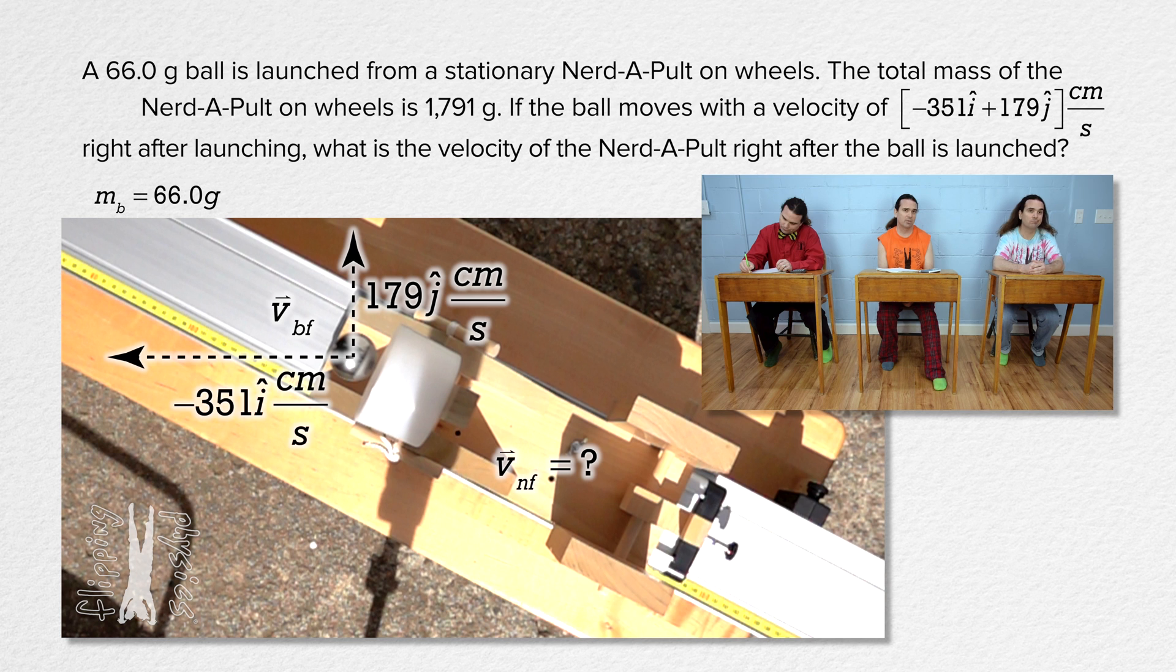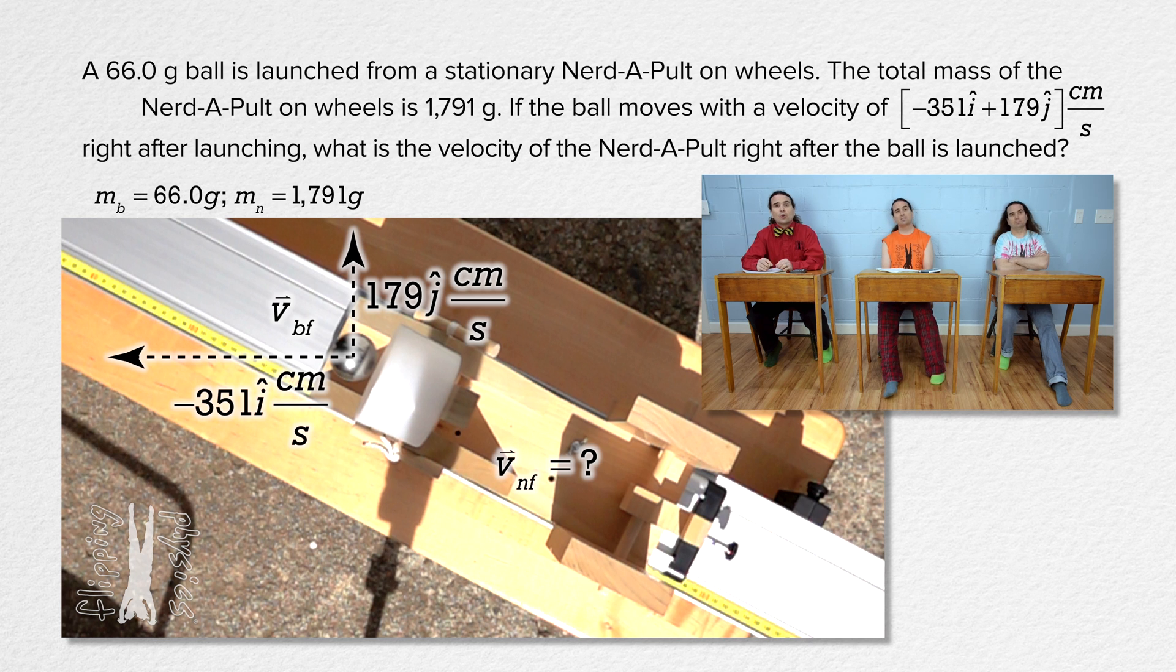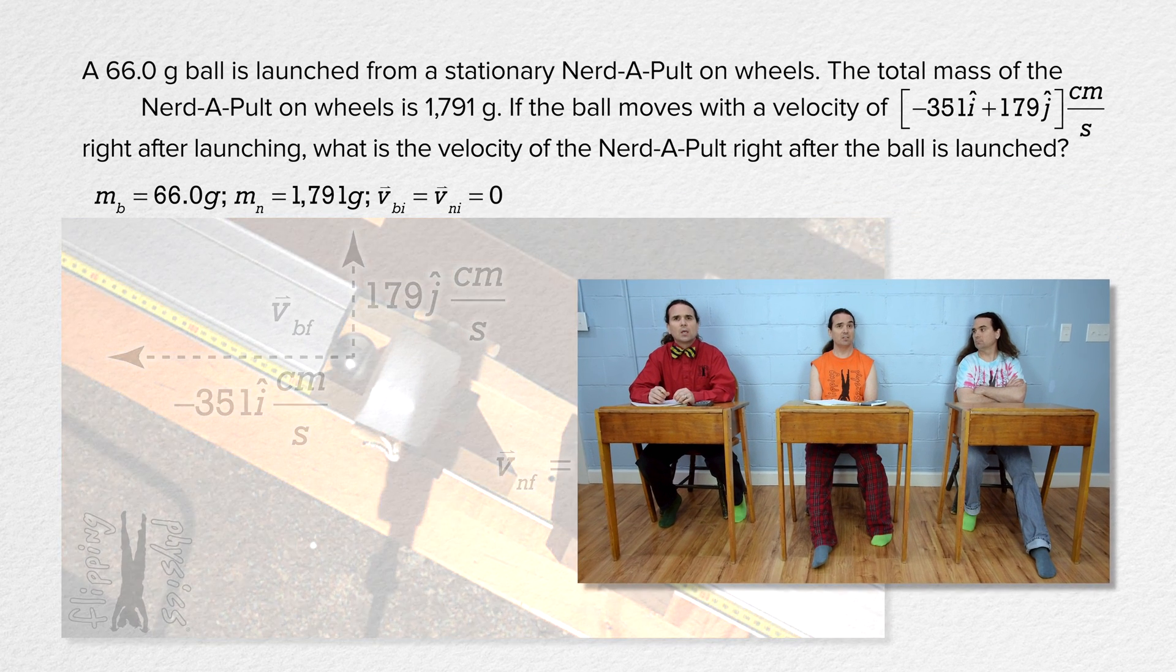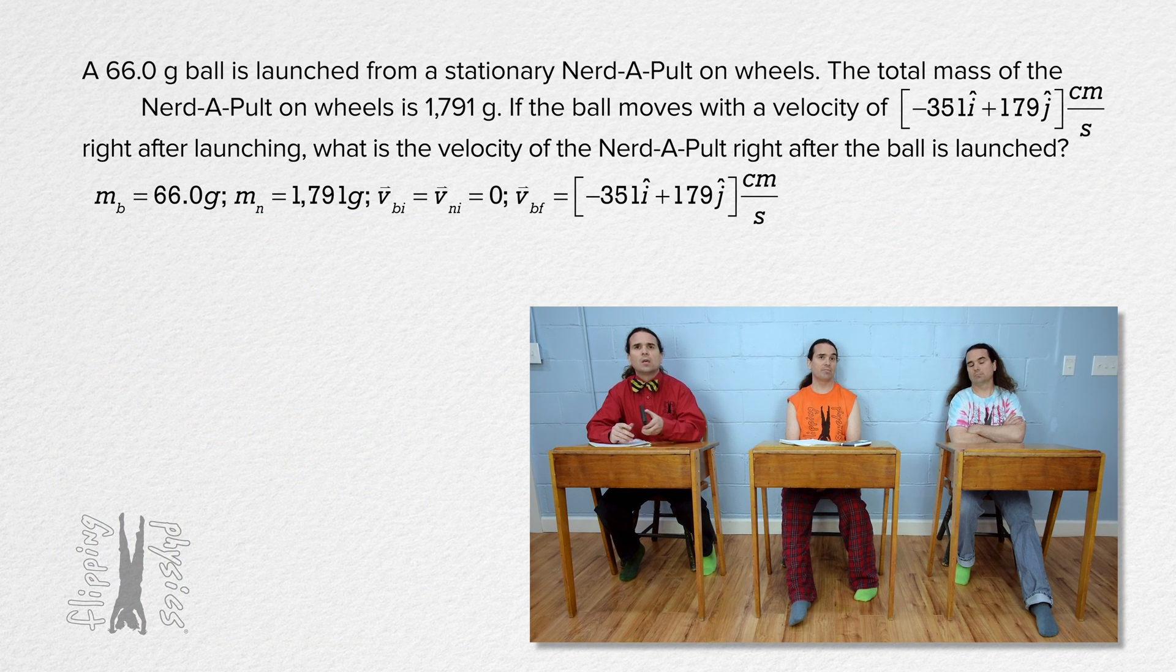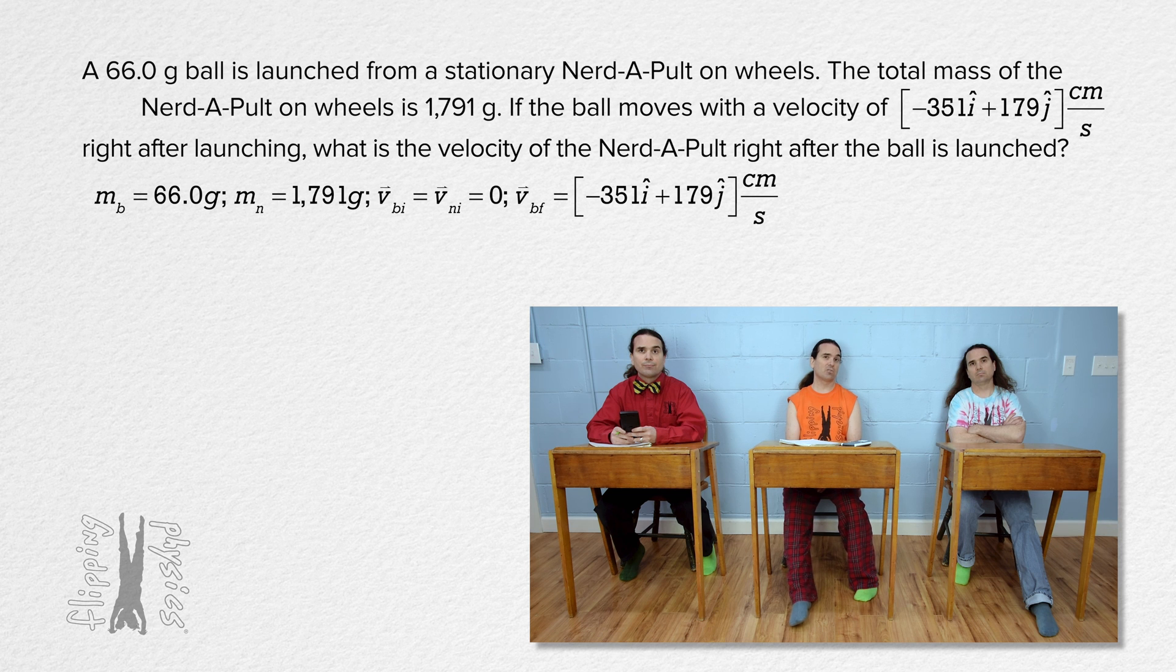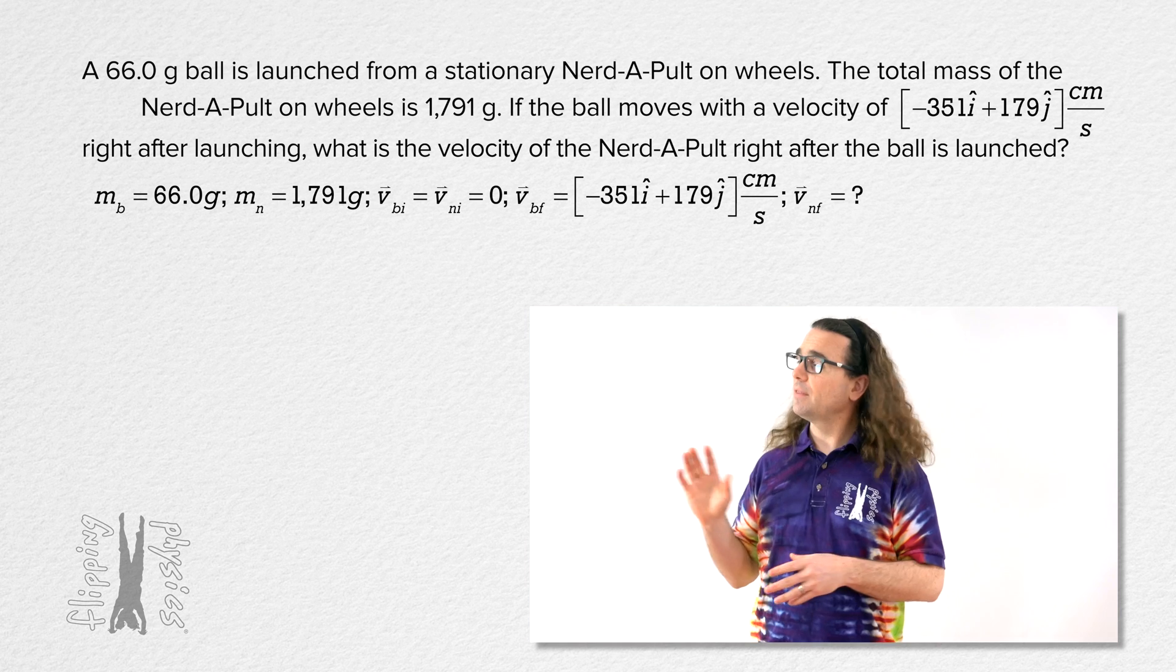The mass of the ball is 66.0 grams. The mass of the Nerdapult is 1791 grams. The initial velocity of both the ball and the Nerdapult is zero. The velocity of the ball final equals negative 351i plus 179j centimeters per second. And the final velocity of the Nerdapult equals question mark. Thank you Bo and Bobby.